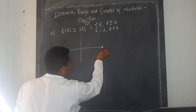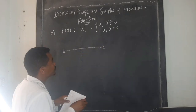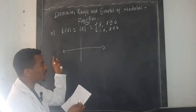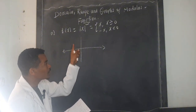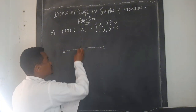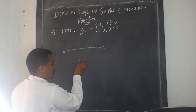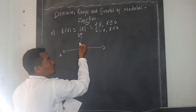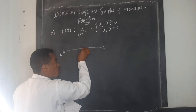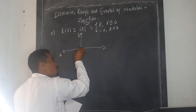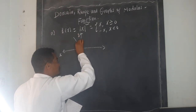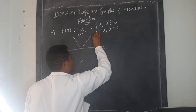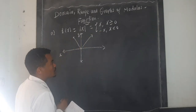In the graph, the x-axis and y-axis meet at zero. For x = negative one, the output is positive one; for x = one, the output is positive one again. So the graph looks like a V-shape, with the vertex at the origin (0, 0).